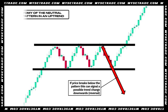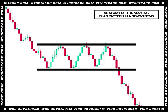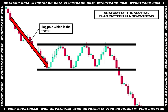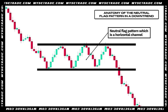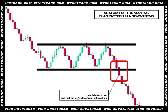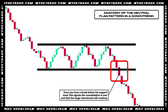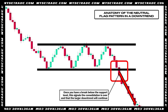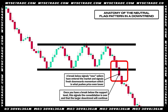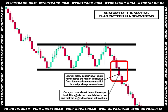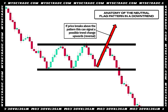Going in the opposite direction — a neutral flag pattern in a downtrend. Your flag pull is a moving downtrend. You have your neutral flag pattern, which is a horizontal channel. Once you have a break below the support level, this signals the consolidation is over and that the larger downtrend will continue. A break below signals new sellers have entered the market and signals fresh downwards momentum, which pushes price lower. If price breaks above, this can signal a possible trend change upwards.